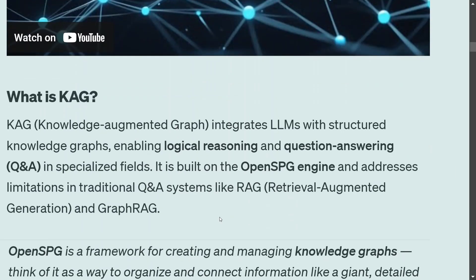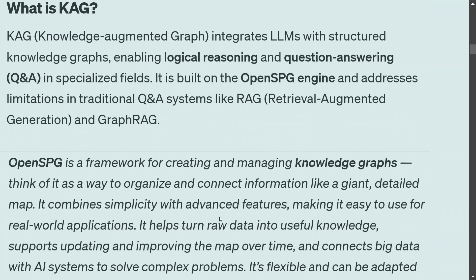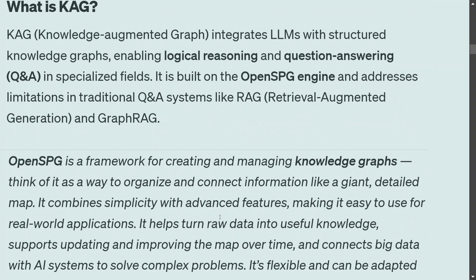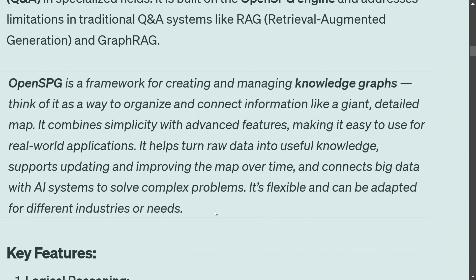CAG — Knowledge Augmented Generation — integrates LLMs with structured knowledge graphs, enabling logical reasoning and question answering in specialized fields. It is built on the open SPG engine and addresses limitations in traditional QA systems like RAG and graph RAG. The open SPG engine is a framework for creating and managing knowledge graphs, combining simplicity with advanced features and making it easy to use for real-world applications.